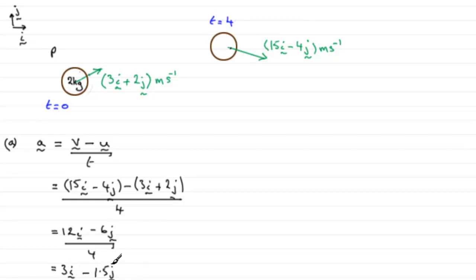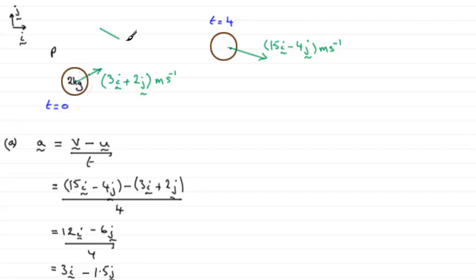If we add this to the sketch — drawing 3i minus 1.5j — you've essentially got 3 units to the right and 1.5 units down. So you've got an acceleration acting inward, something like this. Let's mark it up there: the acceleration is 3i minus 1.5j.